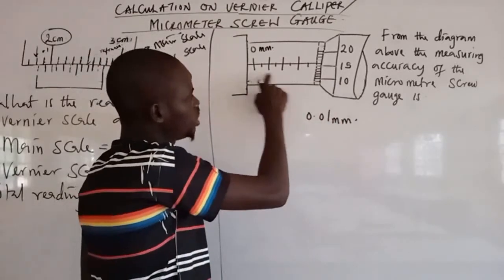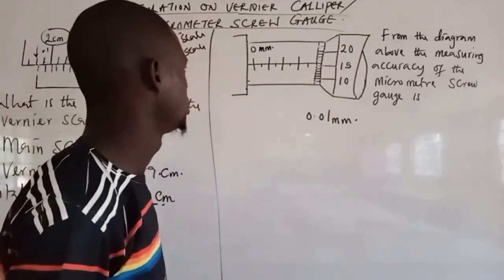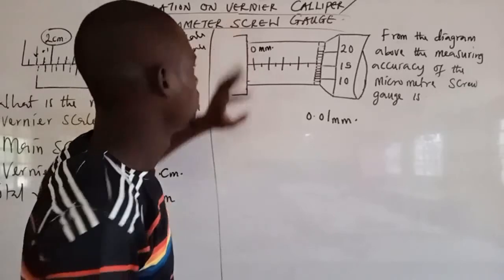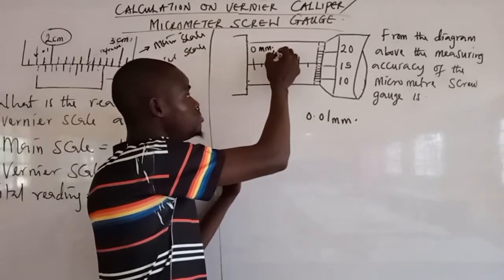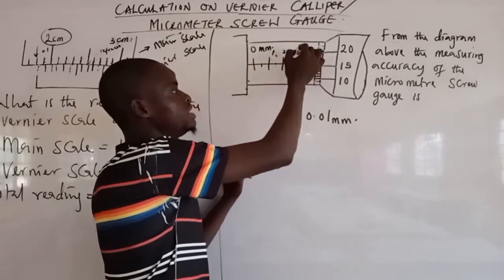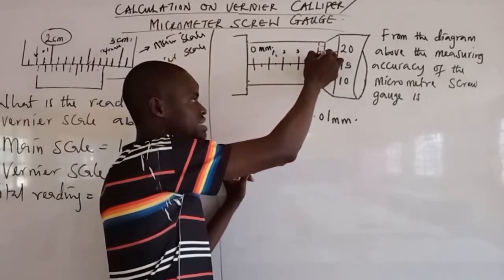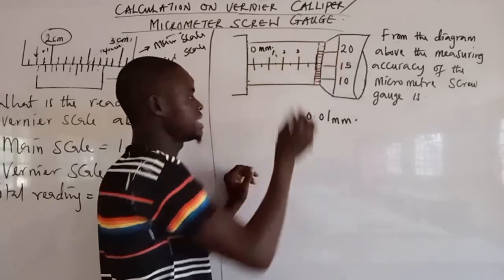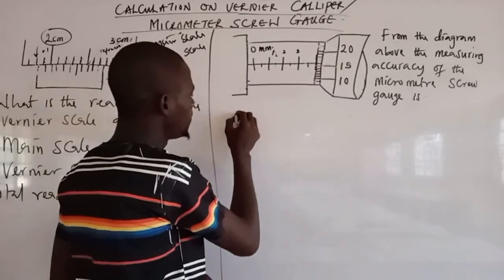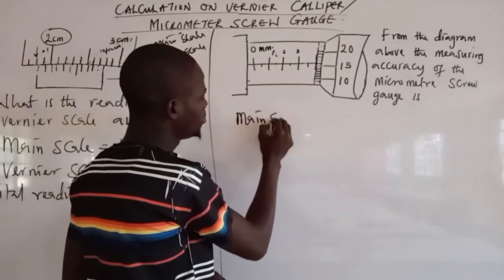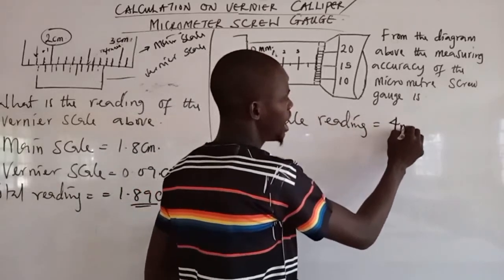Each instrument has a main scale and a vernier scale. Looking at the main scale: this is 0 mm, this first big line is 1 mm, this is 2 mm, this is 3 mm, this is 3.5 mm. Then counting this line itself — that is 4 mm. So the main scale reading equals 4 mm.